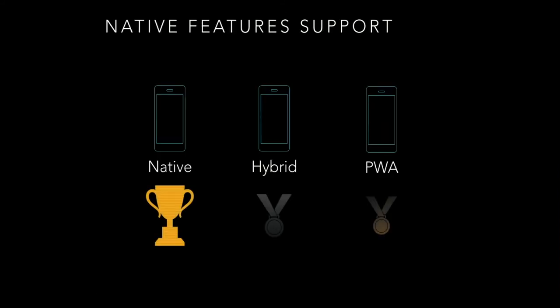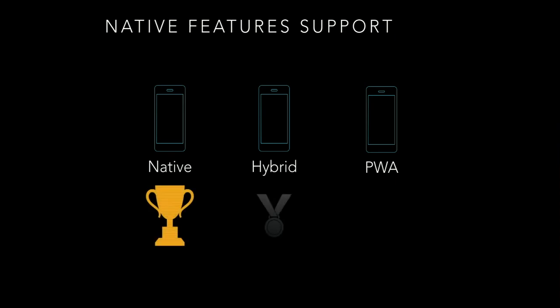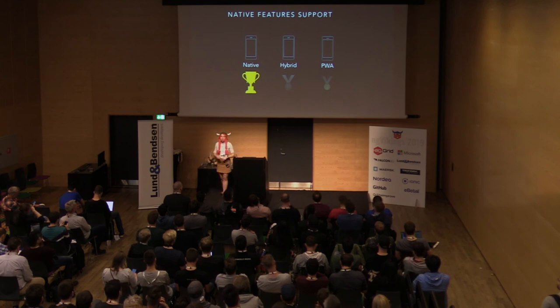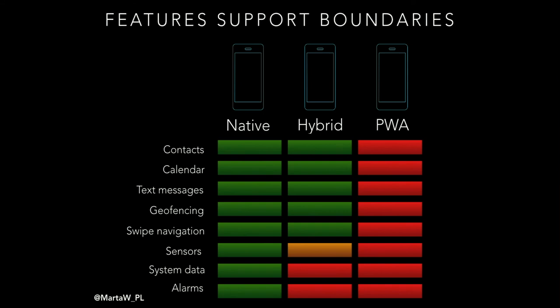Now let's focus on native features. The best solution is native apps, because you have direct access to the operating system. For hybrid apps, you need to check which plugin you want to use and for which platform. For progressive web apps, you need to check which browser will be used by your users. I tried to find features not supported by PWA and hybrid apps. You can see the results in this table: if you want to use contacts, calendar, text messages, geofencing, or swipe navigation, you can't use PWA. For sensors in hybrid apps, it depends on the kind of sensor and the platform. If you want to apply system data and alarms, the only solution is native apps.